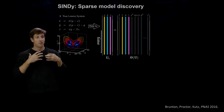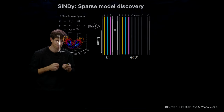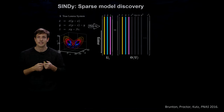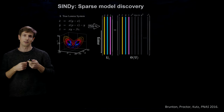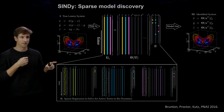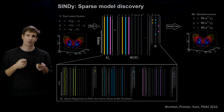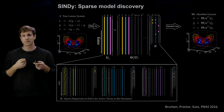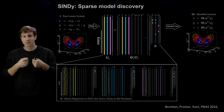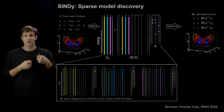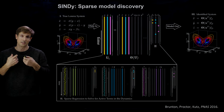We compute functions that we believe could describe our unknown dynamics of interest. After computing the time derivatives and this large library of candidate non-linear functions, we solve a sparse regression problem to find the fewest active terms in our dynamics. We can do this using a sequentially thresholded least squares algorithm, where we sequentially solve a least squares problem and then threshold coefficients below a certain sparsification parameter defined beforehand.